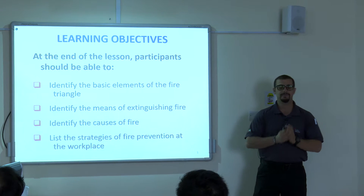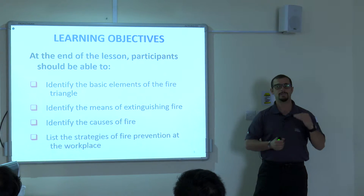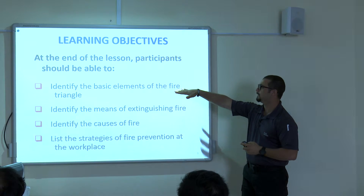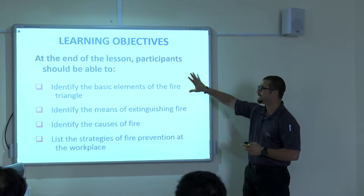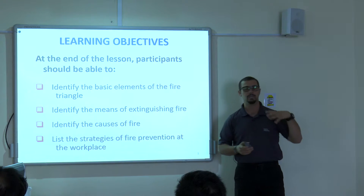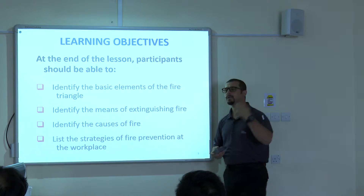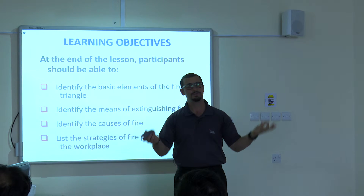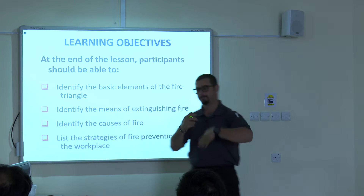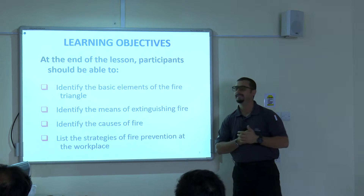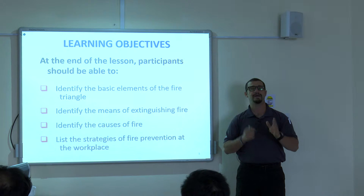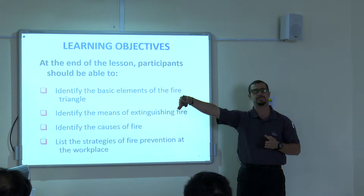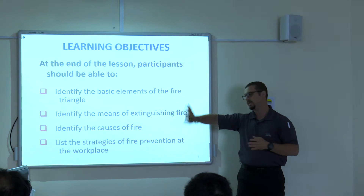The learning objective of this course: we will identify the basic elements of the fire triangle — what kind of elements you need to make a fire. Then we cover fire extinguishers and the different types of extinguishers we have.